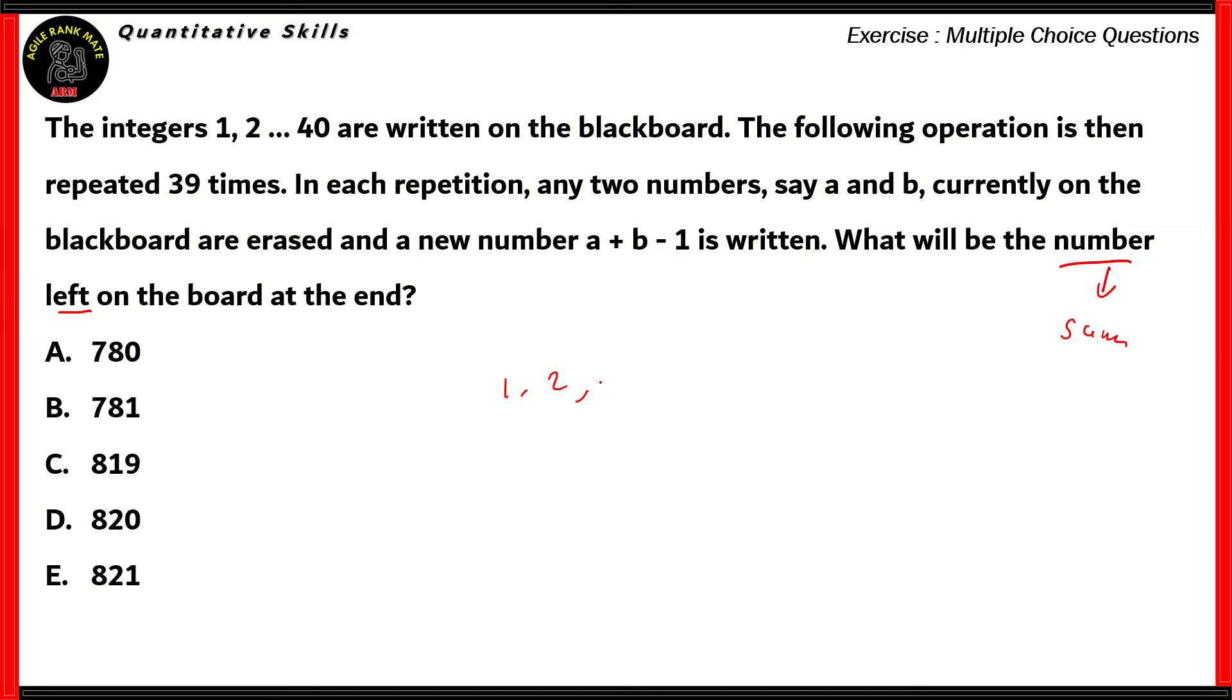We have 1, 2, 3 up to 40, and we're taking any two numbers A and B, remove them, and then we add a new number which is A plus B minus 1. So say we remove 1 and 2, what we add here is 1 plus 2 which is 3 minus 1, which is 2.